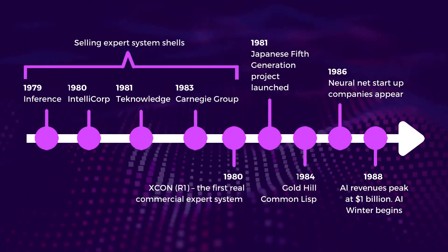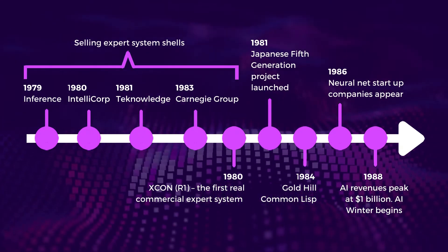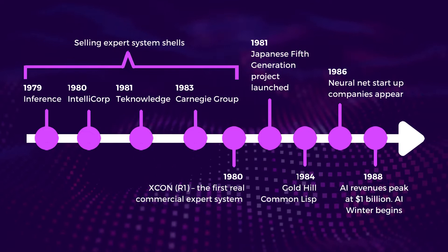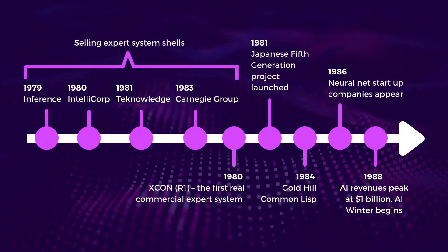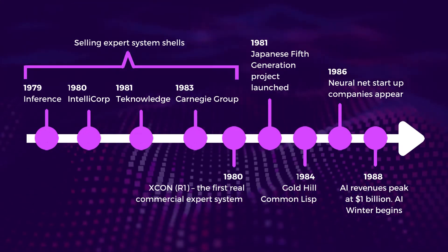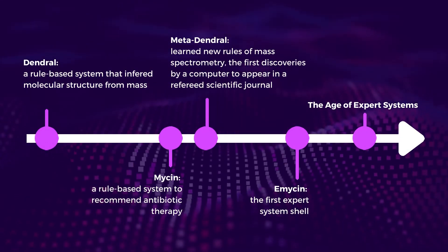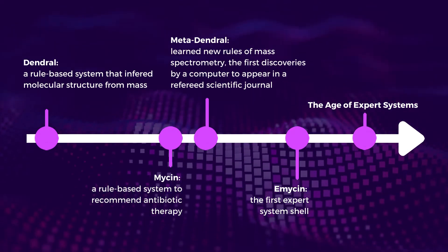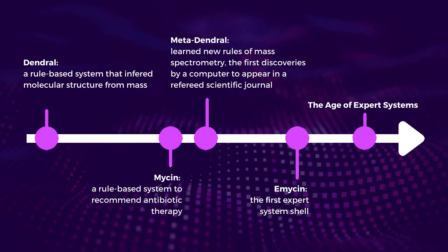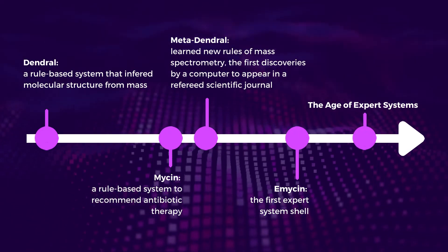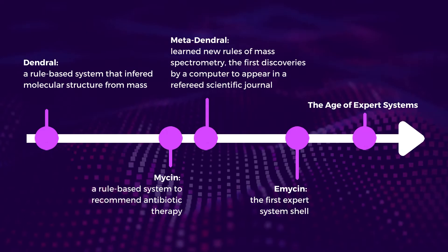In the early to mid-1980s, the desire to build expert systems was very high in the US and elsewhere. AI researchers were aggressively recruited by industry, and expert systems were considered by many to be the next big thing. It was a very fashionable area of AI in the period of 1985 to 1995. Some of the famous systems include Dendral, a rule-based system that inferred molecular structure from mass spectral and NMR data; Mycin, a rule-based system to recommend antibiotic therapy; and Prospector, a rule-based system to explore for oil.